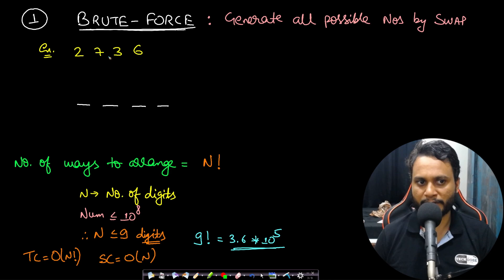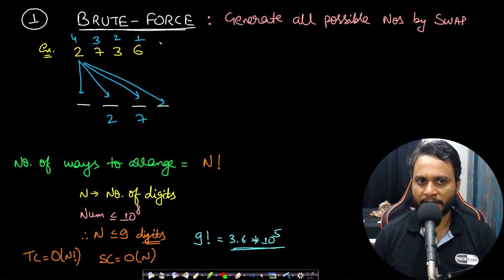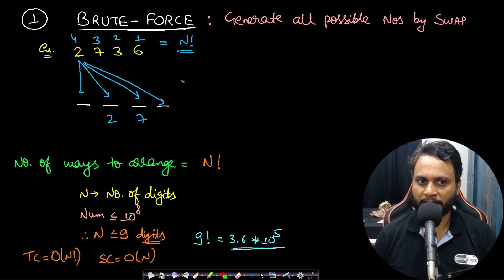Taking the same example 2736, what I will do is try forming all possible arrangements. You can place the 2 at any of these four slots available, so 2 will have four slots. Then 2 consumes one slot, three slots are left for 7, and similarly 7 consumes one slot, leaving two slots for 3 and one for 6. So in total you get n factorial number of arrangements.